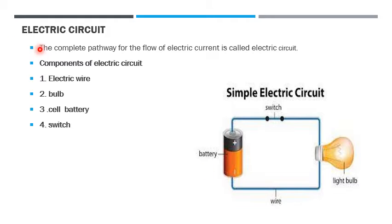Electric circuit. The complete pathway for flow of electric current is called electric circuit. An electric circuit has different components. What are those?